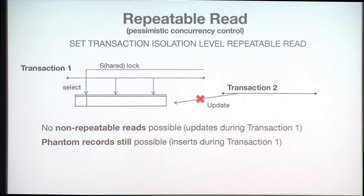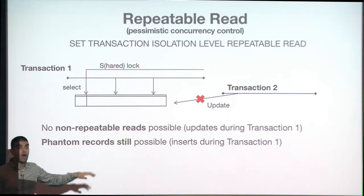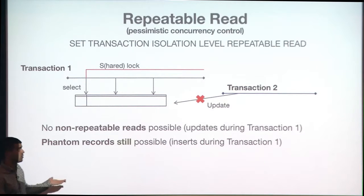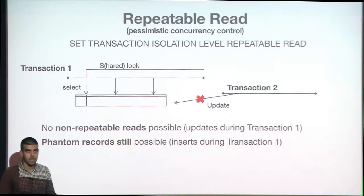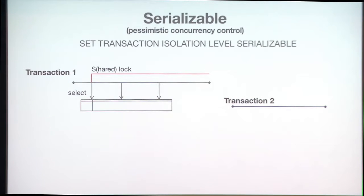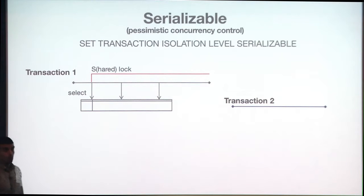However, nothing stops someone from inserting a new record. Phantom records are still possible. If that's a problem, you have just one more option: go higher to the highest pessimistic concurrency control known — serializable.